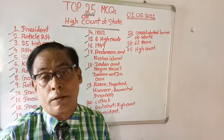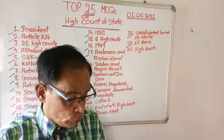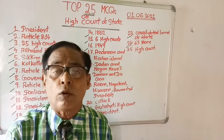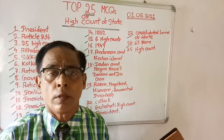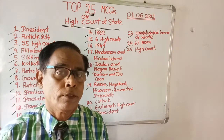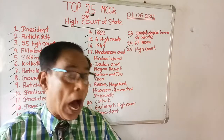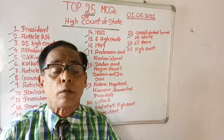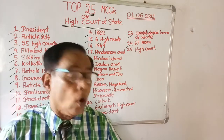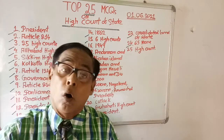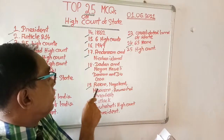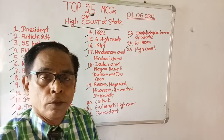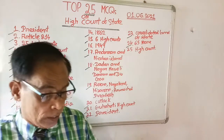Question number nineteen: Gauhati High Court has jurisdiction over which areas? Options are: Assam, Nagaland, Mizoram, and all the above. The right answer is all the above — Gauhati High Court has jurisdiction over Assam, Nagaland, Mizoram, and other northeastern states.